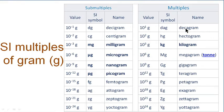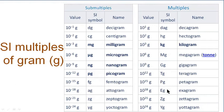In the right column, we can see the larger multiples: decagram, hectogram, kilogram, megagram or ton, gigagram, teragram, petagram, exagram, zettagram, and yottagram. Gradually the weight is increasing from decagram to hectogram to kilogram and so on. We will learn more about these in later classes.